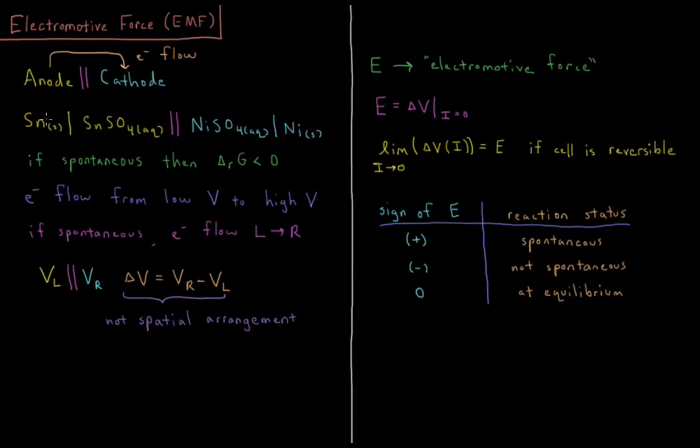We have our anode on the left, cathode on the right, where the electrons flowed from being oxidized off the tin to being reduced onto the tin cations.